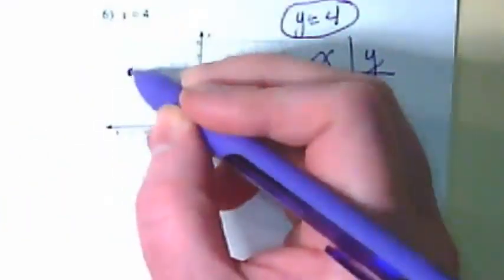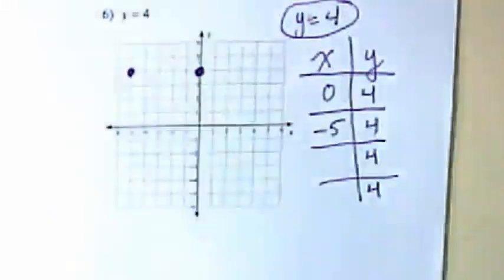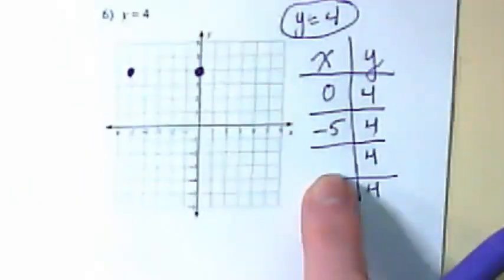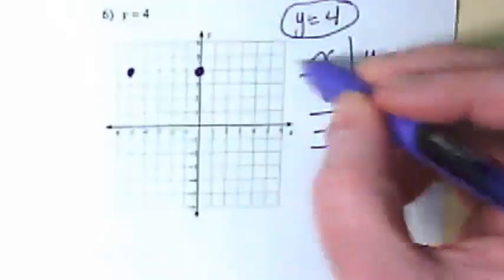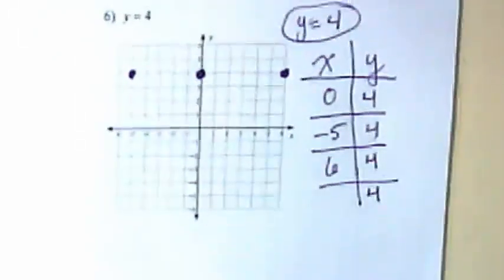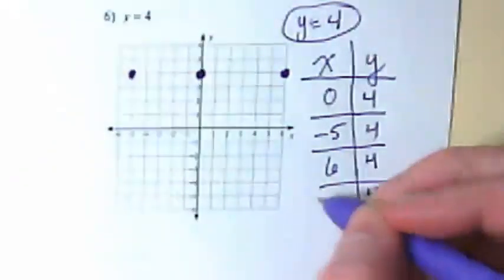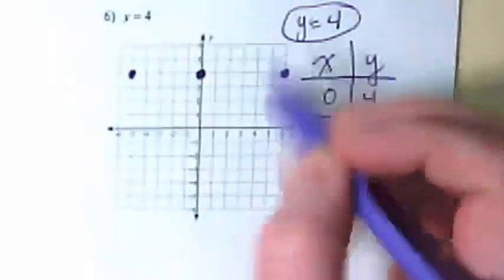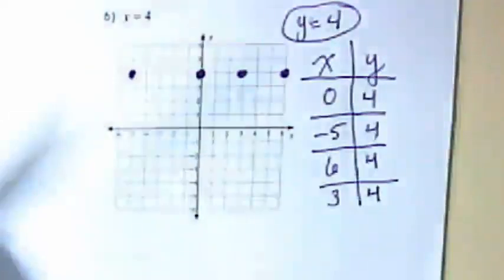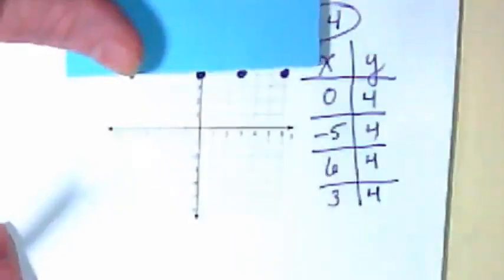How about if I try doing it at negative five? Give me another number that we can put in for an x. Six. What kind of line are you starting to see come across? Let's do one more. Let's do three. And let's go ahead and draw our line.